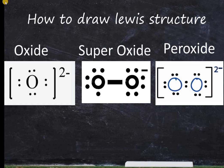In this video I'm going to talk about how to draw the Lewis dot structure for oxide, superoxide, and peroxide. Whenever you draw any Lewis dot structure you should know what the formula is, then you can rearrange the electrons based on how many valence electrons you have.